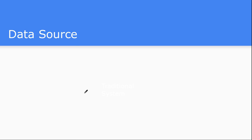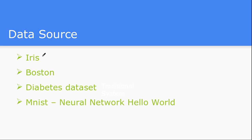The next topic is the data source. Now you know programming — but you also require data. There is a very famous Iris database, which is a flower-related dataset; the Boston housing database; and a diabetes-related database. These first three are already included as part of the Scikit-learn library. We will import each dataset one by one using programming and see how each is structured, what features are associated with it, what labels are there, and whether it is used for regression or classification.